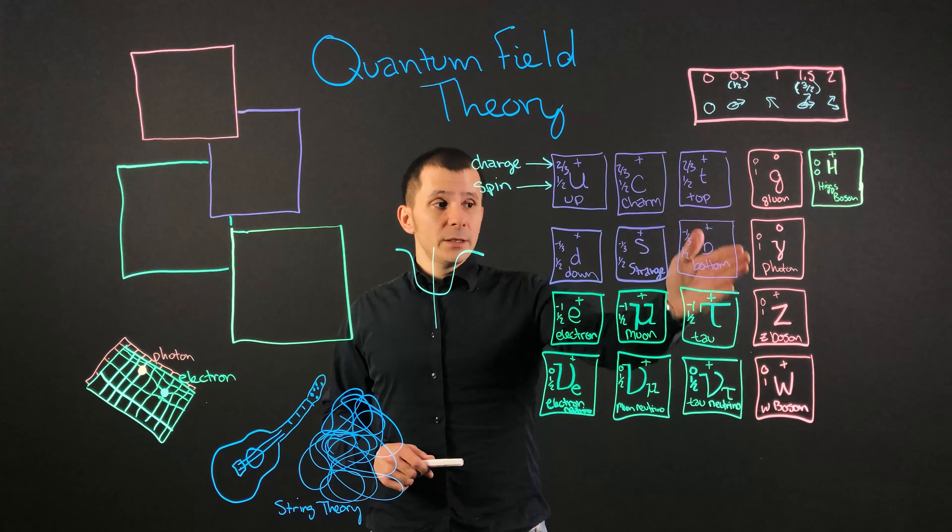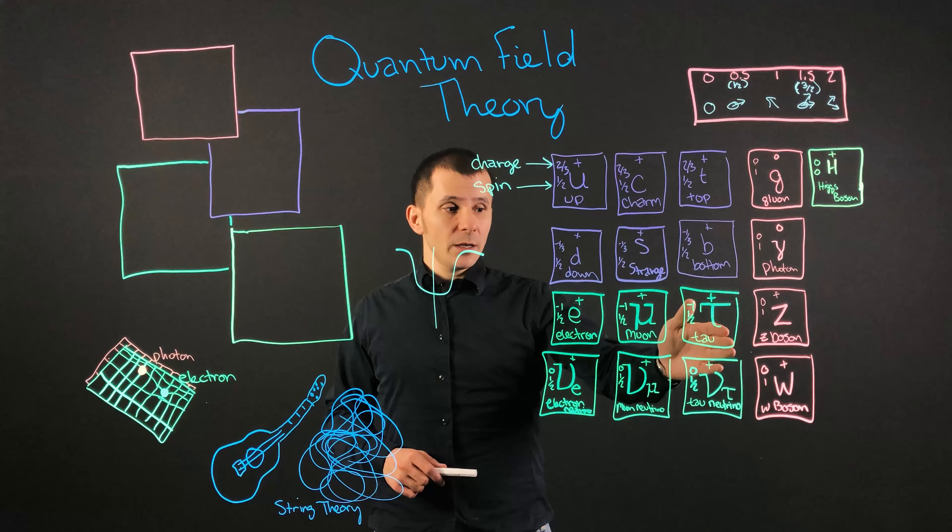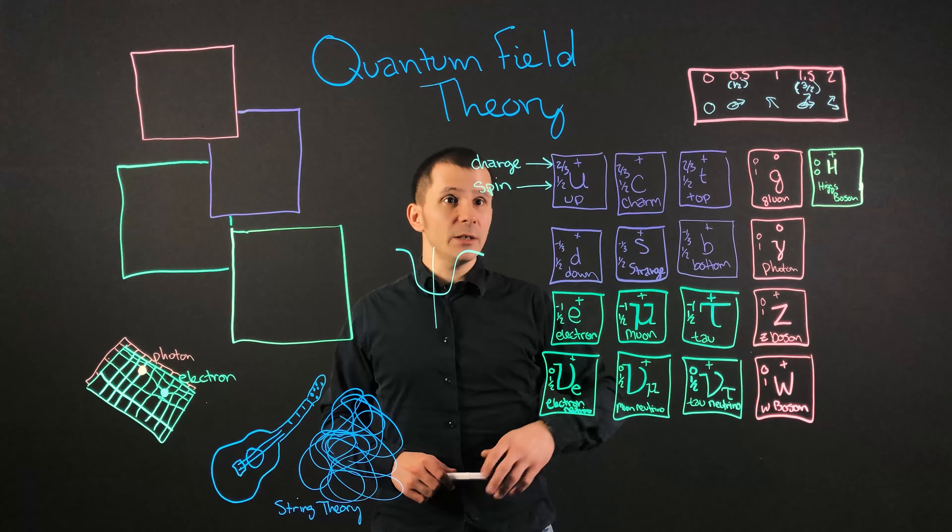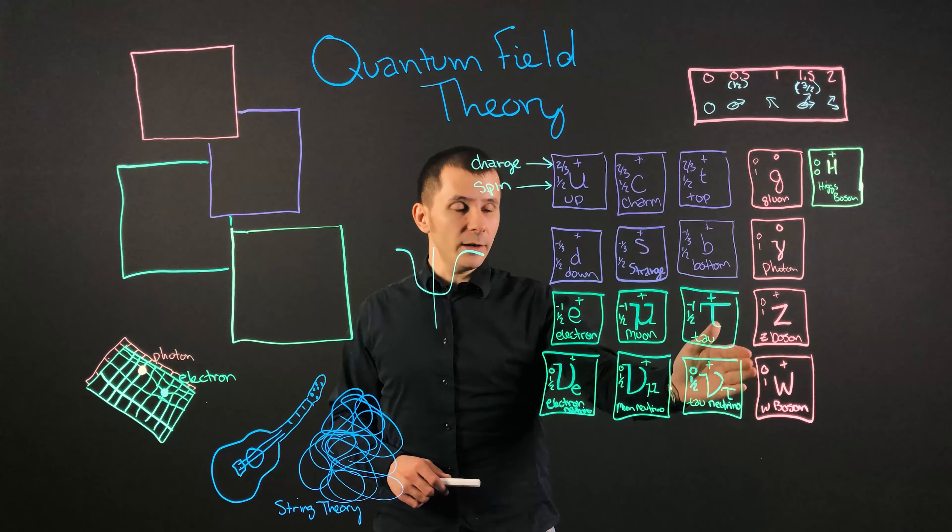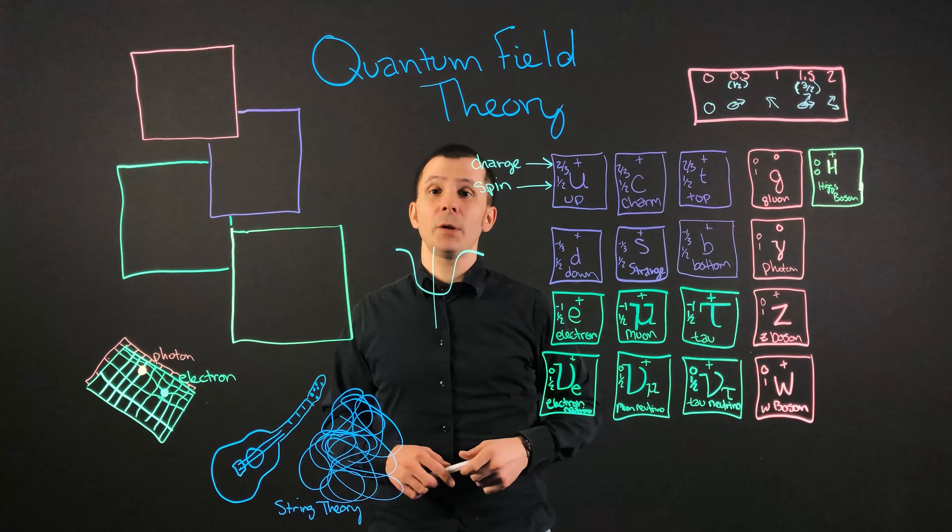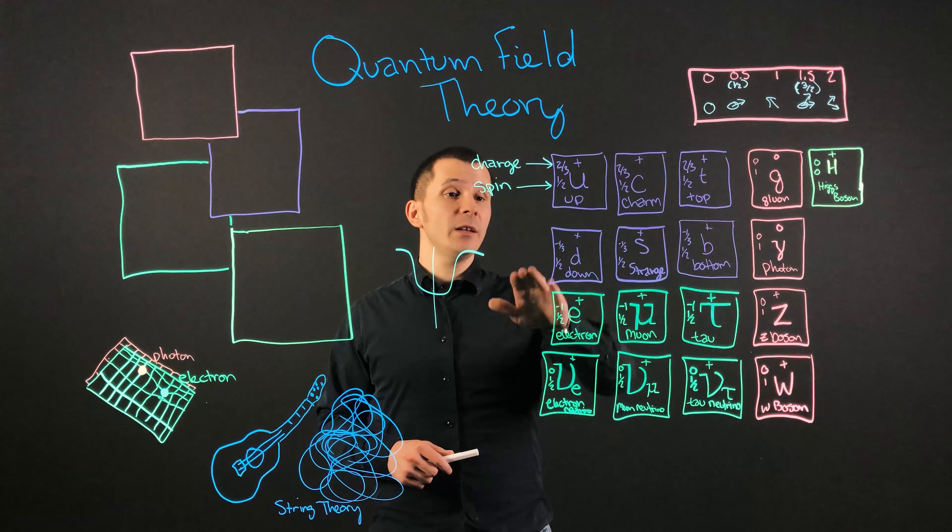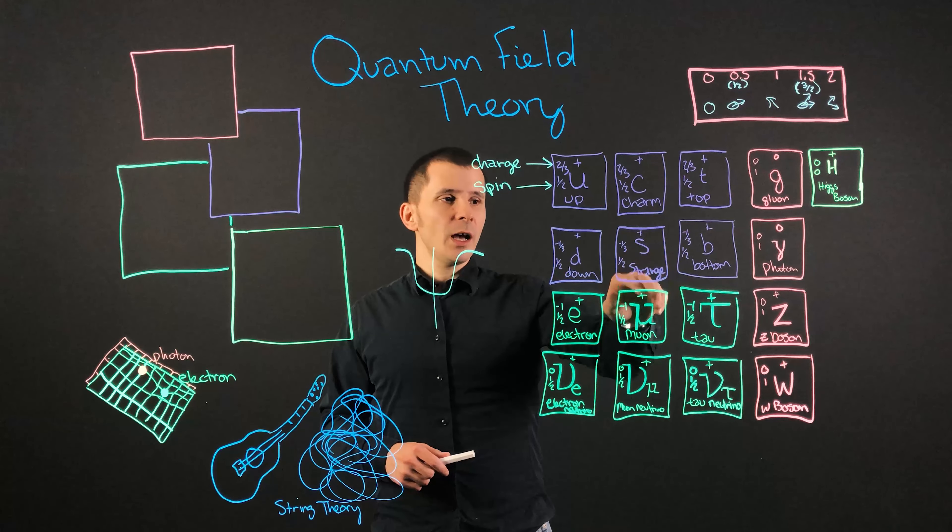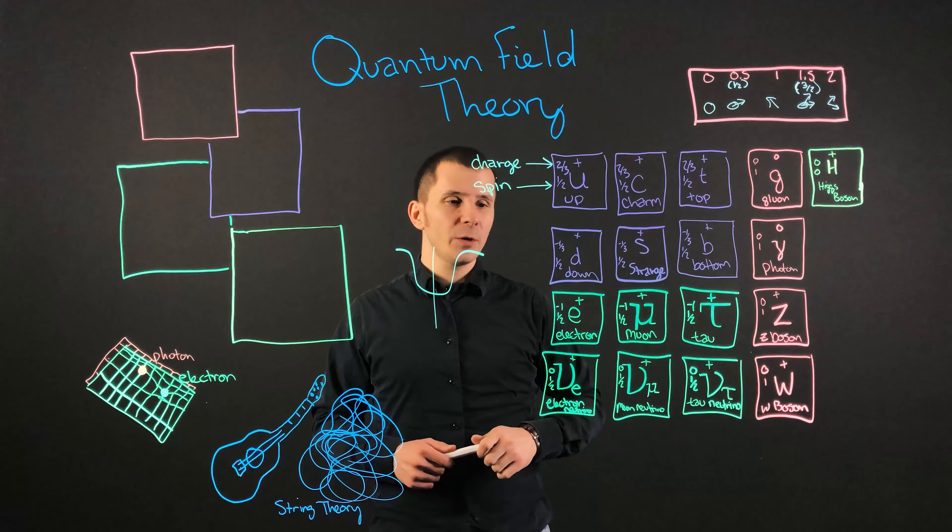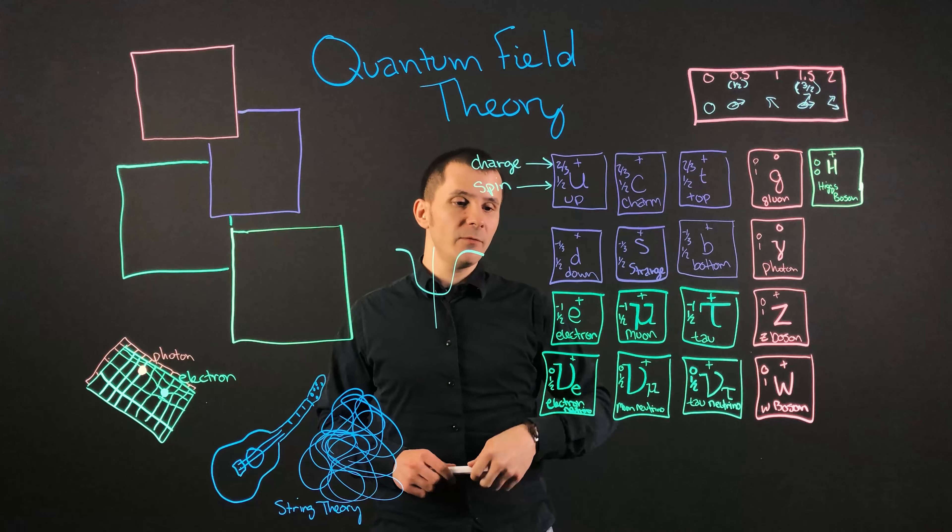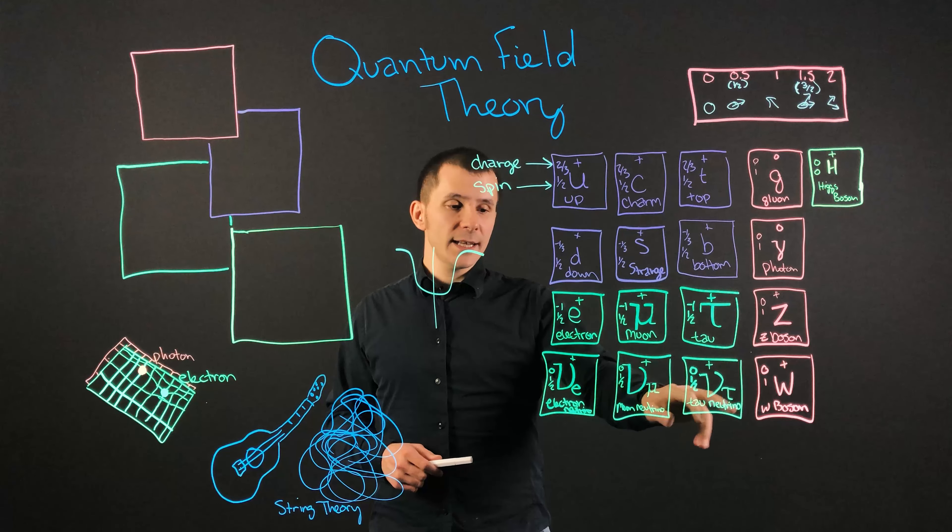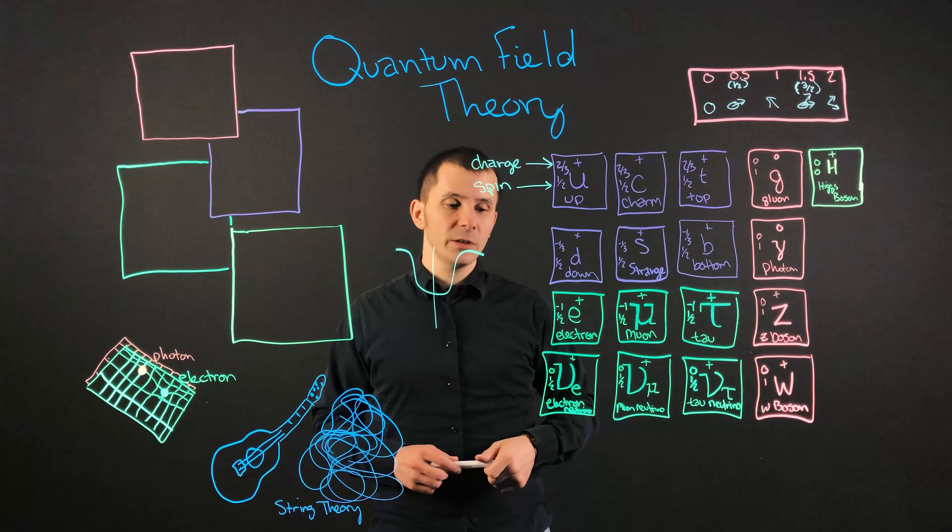Now there are the gluon, photon, Z boson and W boson all have a spin of one so essentially they fall in line with the vector format. We have a one half spin for up, charm, top, bottom, strange and down particles and we have a half spin for electron, muon, tau, tau neutrino, muon neutrino and electron neutrino.